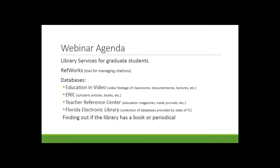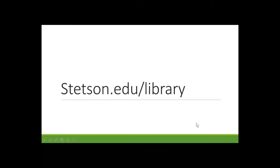We'll start off by talking about some DuPont Ball Library services for graduate students. Then I'll show you how to set up an account with RefWorks, which is the tool you can use for managing citations. Then I'm going to talk about some specific databases and how to use them efficiently, and finally I'll wrap up by showing you how to find out if the library has a specific book or periodical. Everything I'm going to show you today you can access via the library website at Stetson.edu/library.